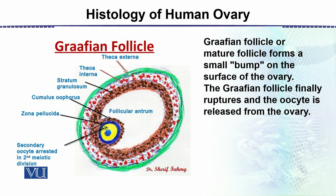In this diagram we can see that centrally placed is the secondary oocyte, which is the egg. This is surrounded by the zona pellucida. There are different layers of cells including the follicle cells, and then the cumulus oophorus, which are follicle cells that are loosely packed rather than compacted.